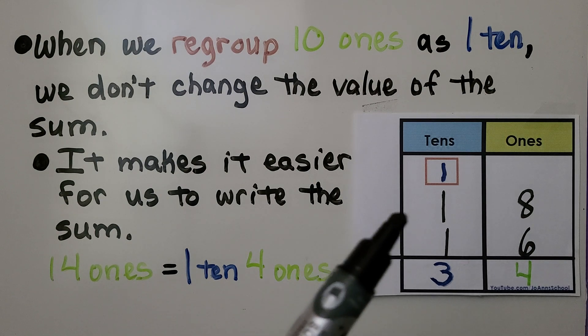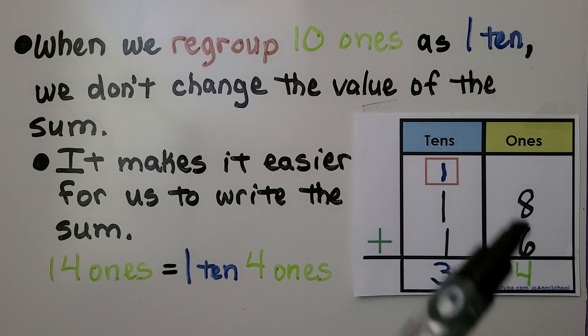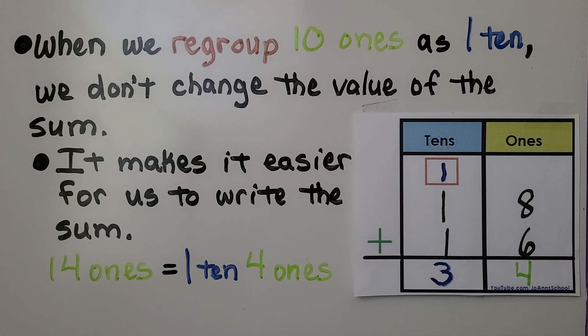Here we have 18 plus 16. We start by adding the ones. 8 plus 6 is 14, and 14 ones is one ten, four ones.